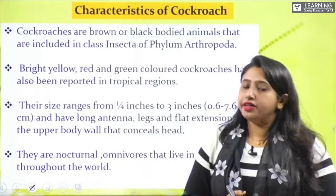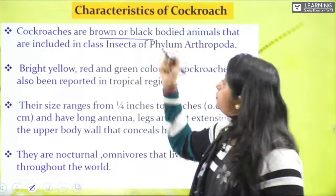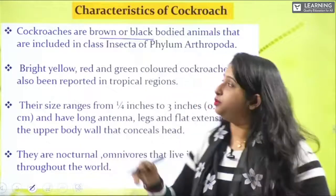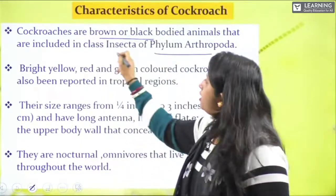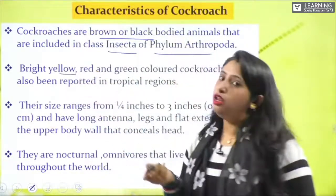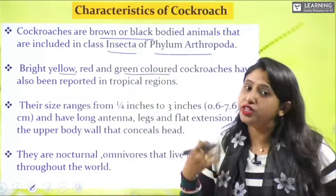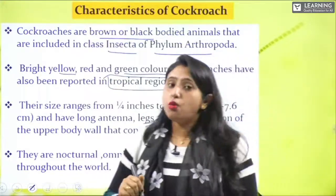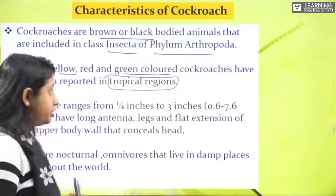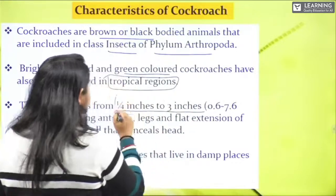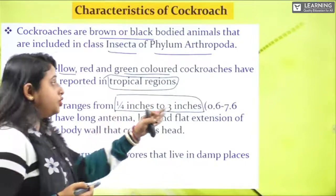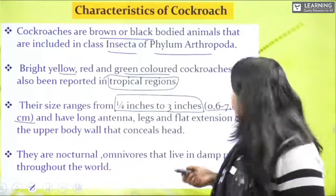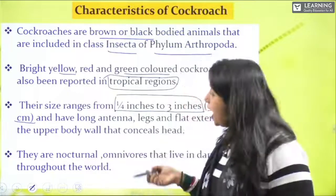Cockroaches have black or brown bodies. They belong to phylum Arthropoda and class Insecta. In tropical regions, they can be bright yellow, red, or green in color. Their size varies from one-fourth inch to three inches, that is 0.6 to 7.6 centimeters. They have long antennae.